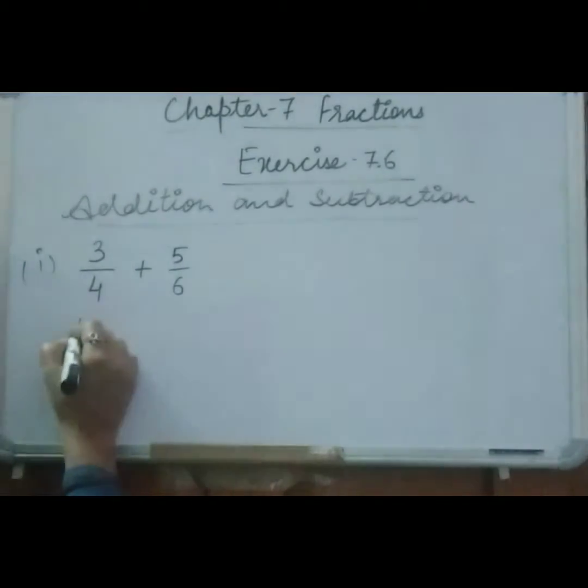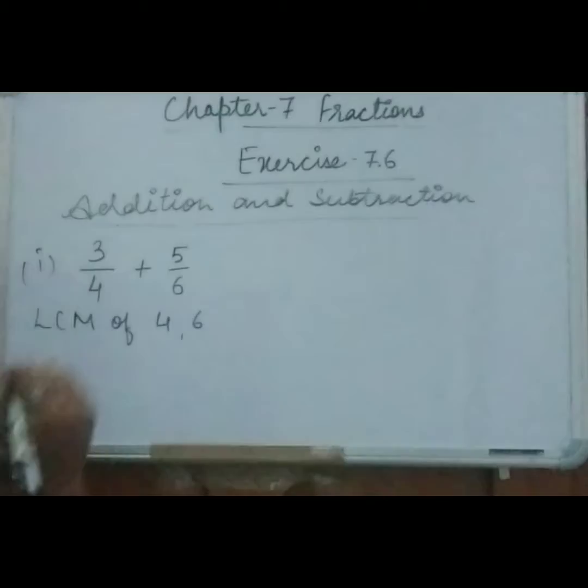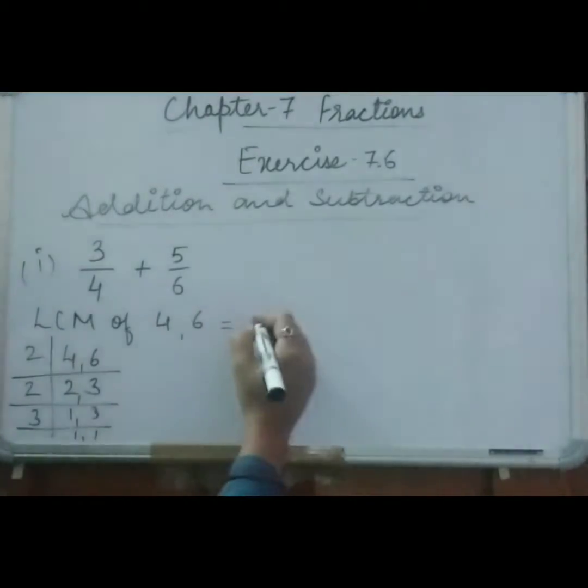So how we will make denominator same? We will just take LCM of 4 and 6. So LCM of 4 and 6 here: 2 times 2 is 4, 2 times 3 is 6, 2 times 1 is 2, 3 will remain same, 3 times 1 is 3. So LCM of this one is 2 into 2 into 3. That is 4 times 3 is 12.